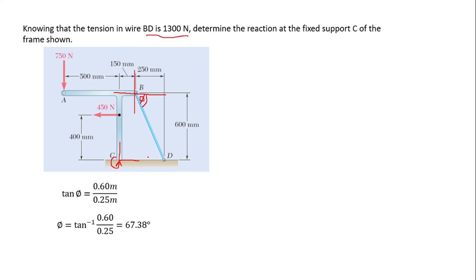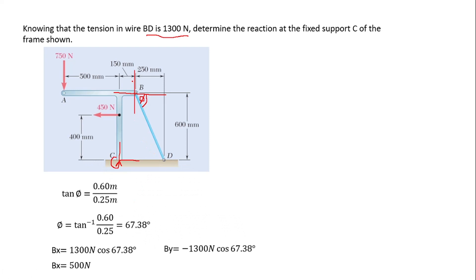We're resolving the force in x and y components. The tension is moving on the positive x-coordinate and negative y-coordinate. Let's label these Bx and By. To find Bx: Bx = 1300 N × cos(67.38°). Since it's on the positive x side, we don't negate it, giving us 500 newtons. We've resolved the tension in the x-component: Bx = 500 newtons.